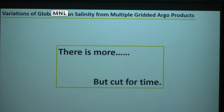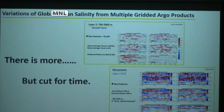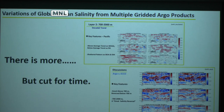Beyond what we saw, there's more work we had to cut. One of them is on the trend — differences in variability cause differences in trends. You can see RG has a smaller trend in the tropical Pacific. We also compared Argo with ECCO: ECCO is doing pretty great on the upper 700 meters, but something is going wrong between 700 and 2000 meters, though we can't go into that here.